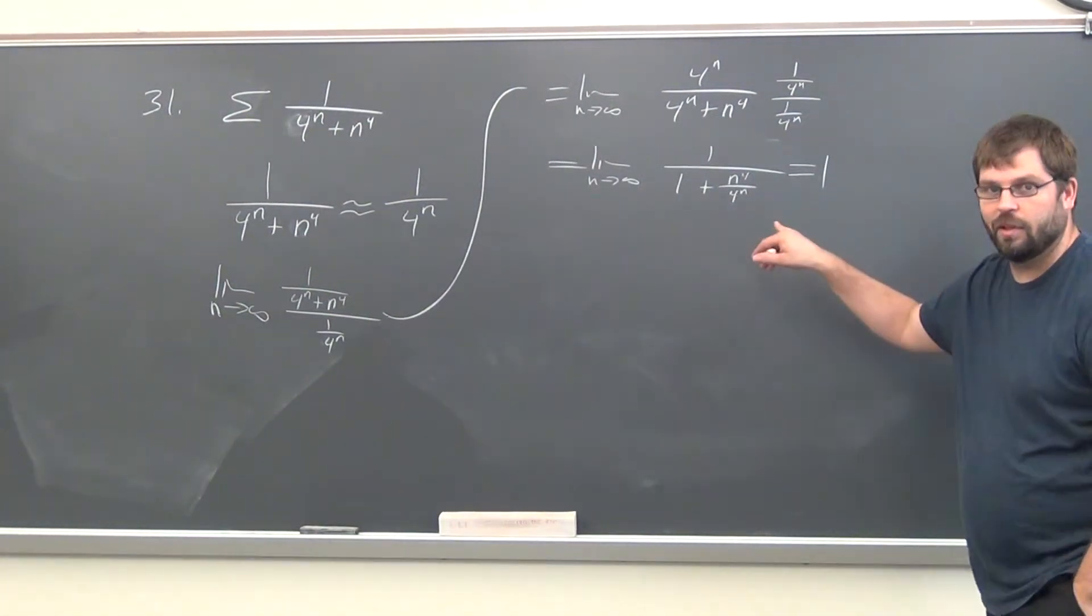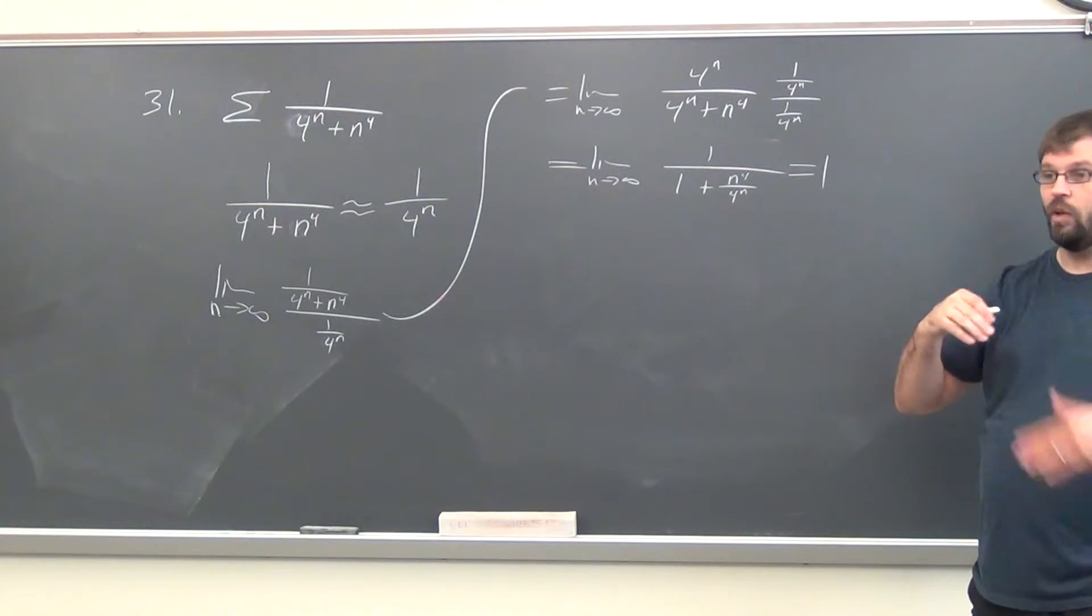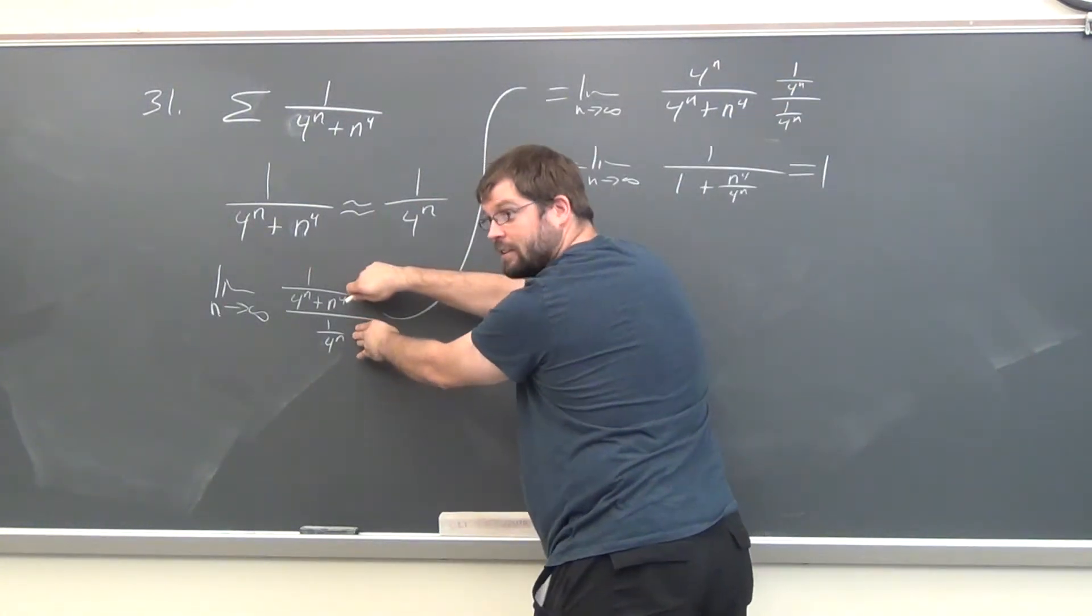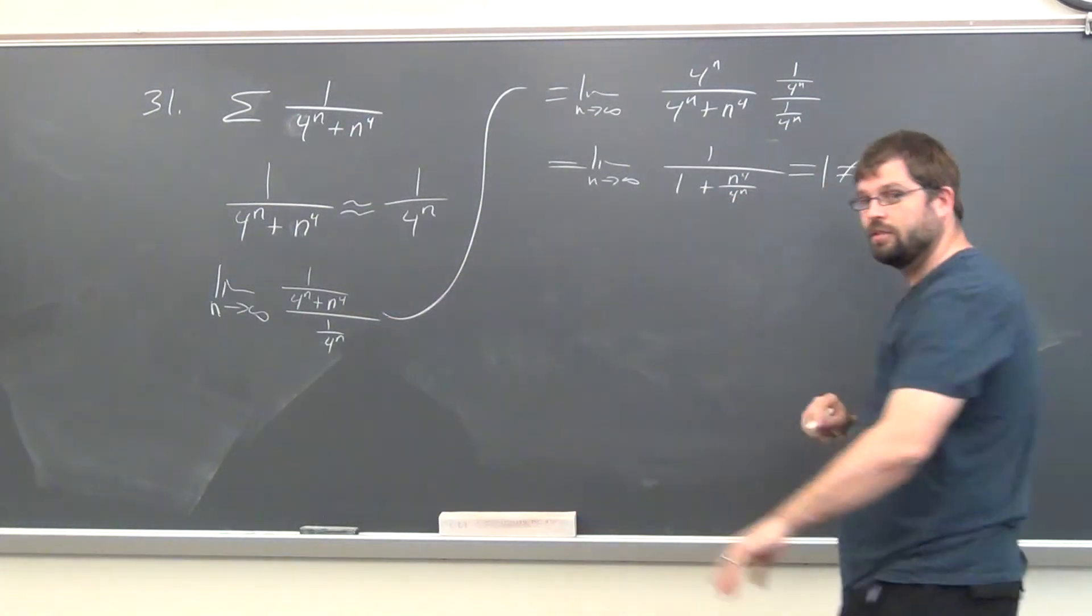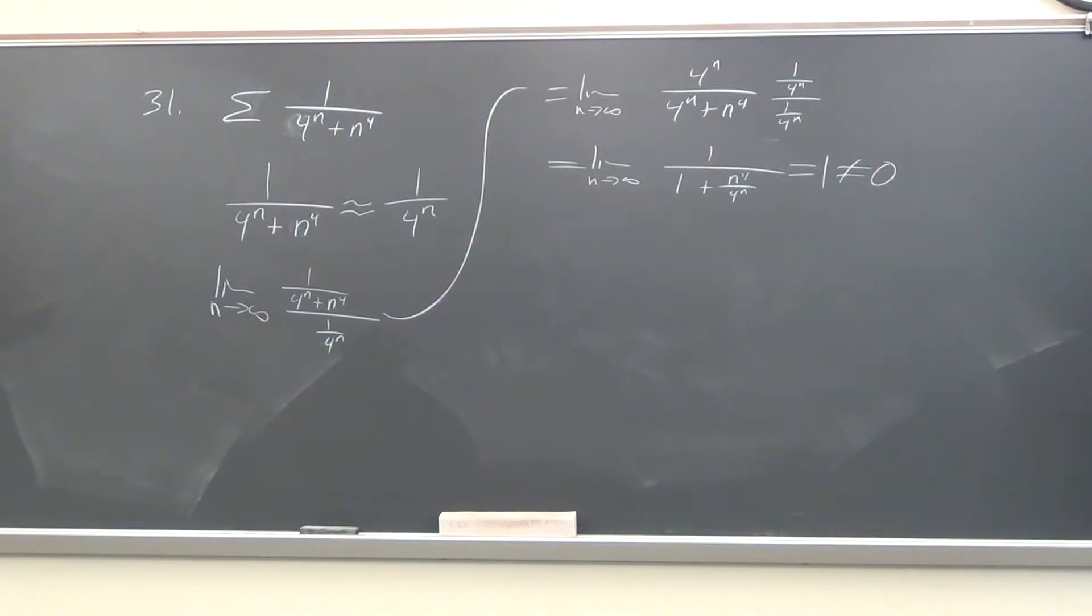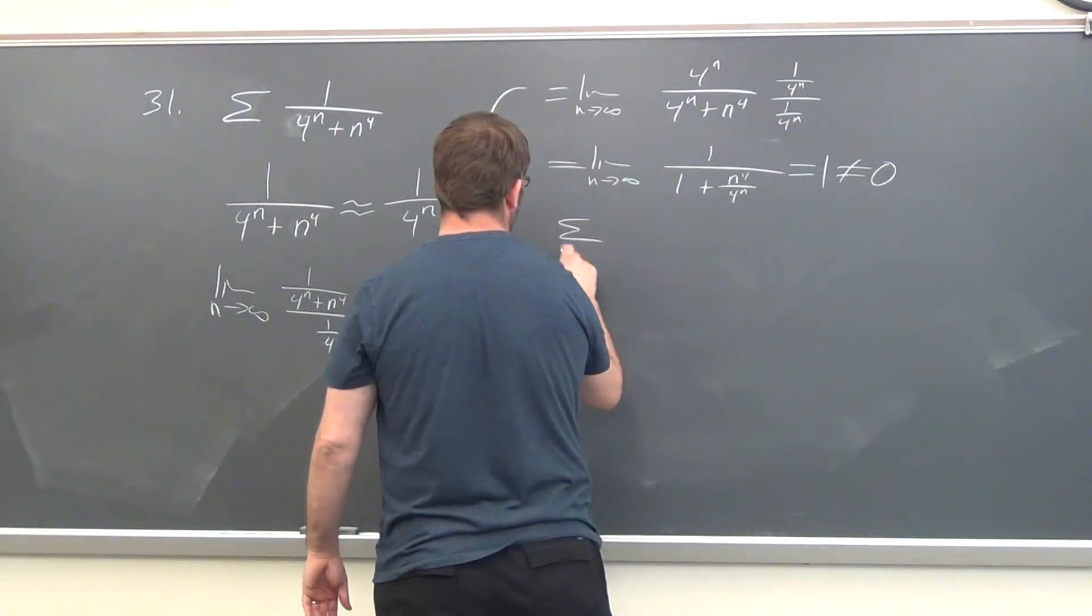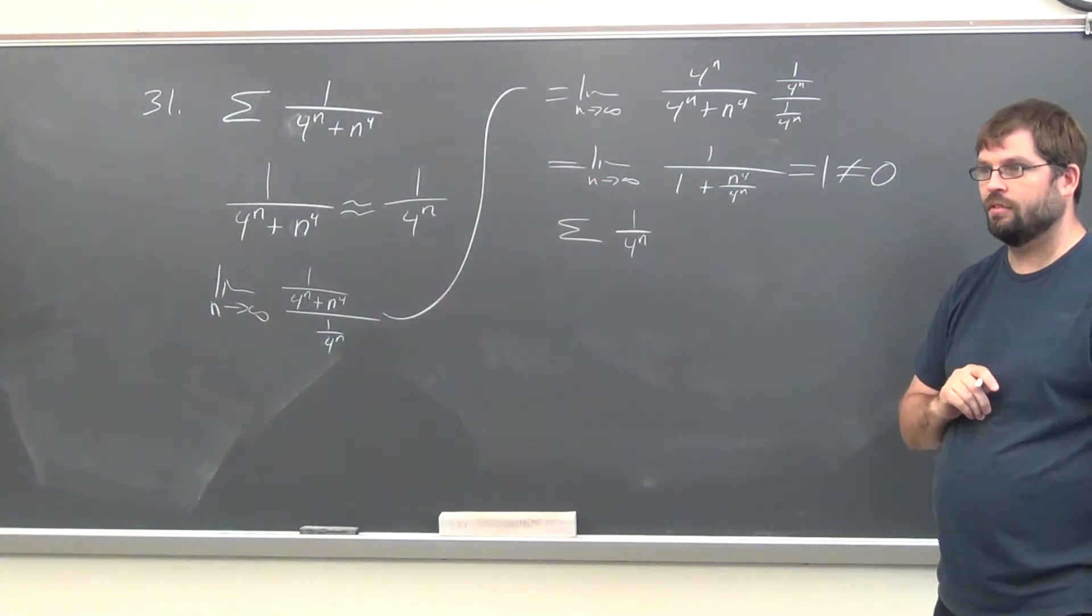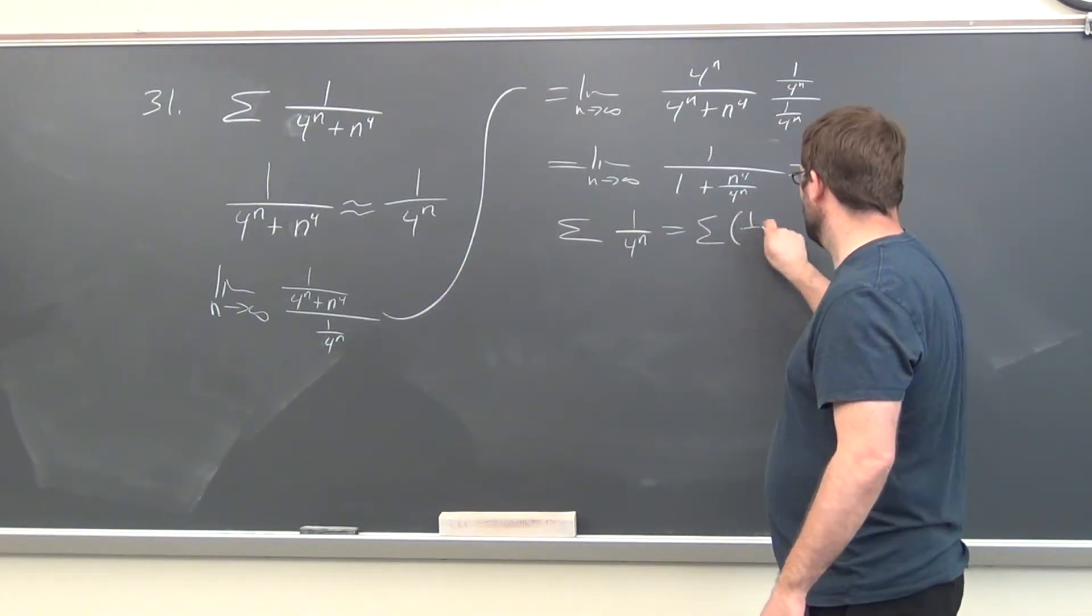We're in the middle of the limit comparison test. What do we want to be true? We want this limit to be non-zero, right? We want to show that these two series act the same. So we want to say their limit is non-zero, which it is.